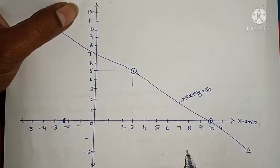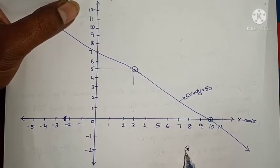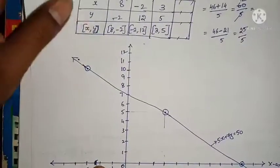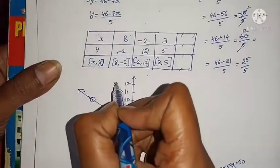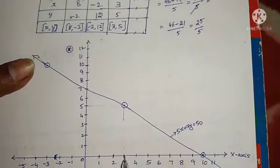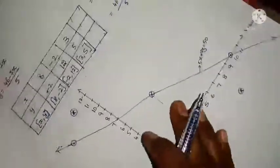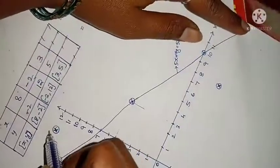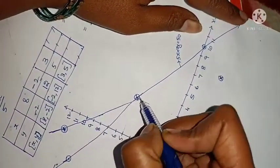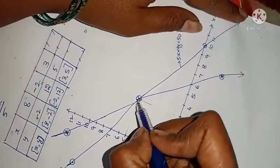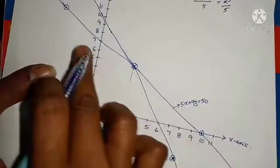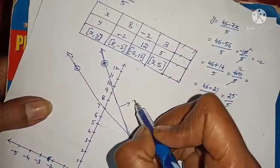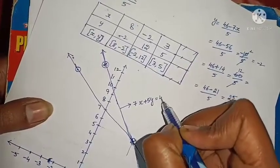For equation 2 — plotting (8, minus 2), (minus 2, 12), and (3,5). Join these 3 points. This is the line for equation 2: 7x plus 5y equals 46. If you draw in your graph sheet, you will get two straight lines very neatly.